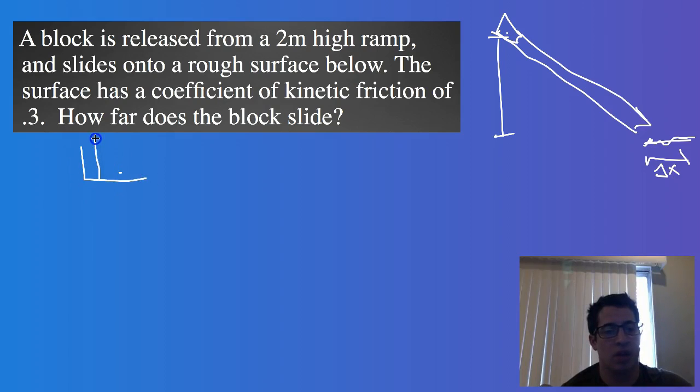So we'll say, okay, we have some amount of gravitational potential energy at the beginning and it's going to slide until it comes to a stop at the bottom. So at the end, there's no energy left because the kinetic energy is all gone.